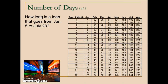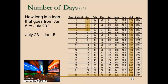Another example asks for the term of a loan starting January 5th to July 23rd. July 23rd is further in the year, so we start there — it is the 204th day. January 5th is simply the 5th day. The difference is 199 days for the length of this loan.